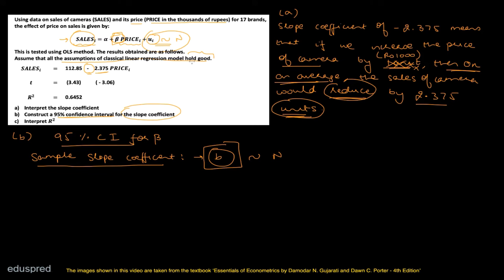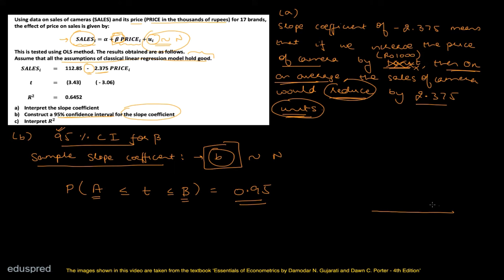Because the estimator b follows a normal distribution, we can work with the T statistic to create this 95% confidence interval. The starting point is: P(A ≤ T ≤ B) = 0.95. Graphically, the central region of the T distribution covers 0.95, with 0.025 in each tail. The lower bound is A and the upper bound is B.